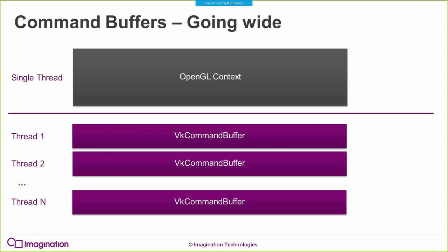In Vulkan, that state information is held on each individual command buffer. This means thread one can record to the first command buffer and mutate its own set of state, while thread two records to a different command buffer and updates a different bit of state. This allows us to have as many threads as we want recording to as many command buffers as we want. You'll probably want to limit that to about as many threads as you have CPU cores.